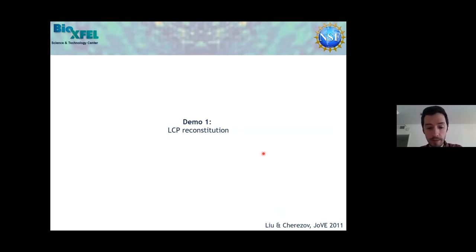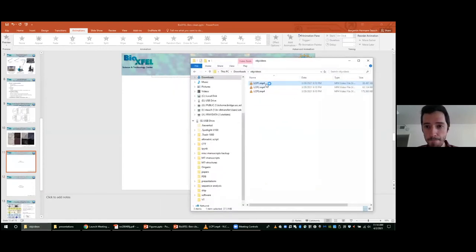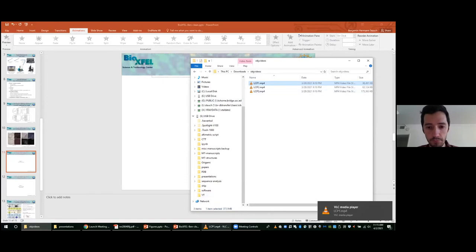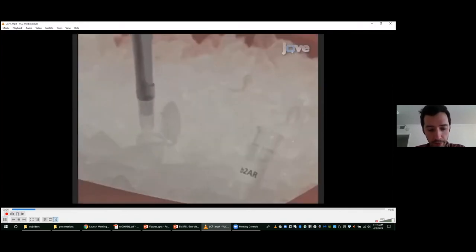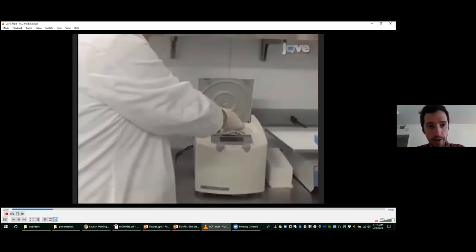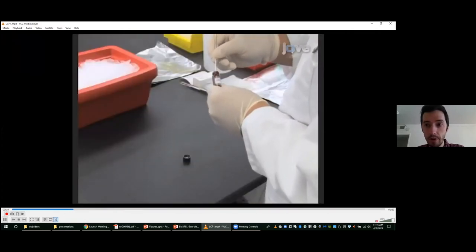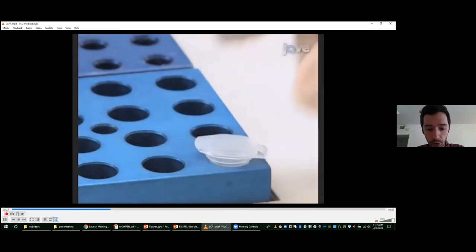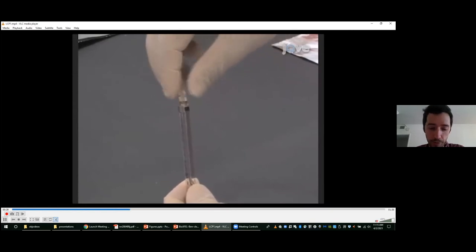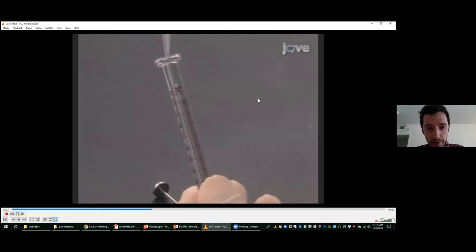I'll now show a quick demo video on how to make LCP. This is from JoVE, Journal of Visual Experiments, from our group. First, the protein of interest is concentrated in a microcentrifuge to the target concentration that we want to achieve or that we can achieve. Then we melt the lipid. For GPCRs we use a mixture of monoolein and cholesterol, and this host lipid is usually prepared much before the experiment.